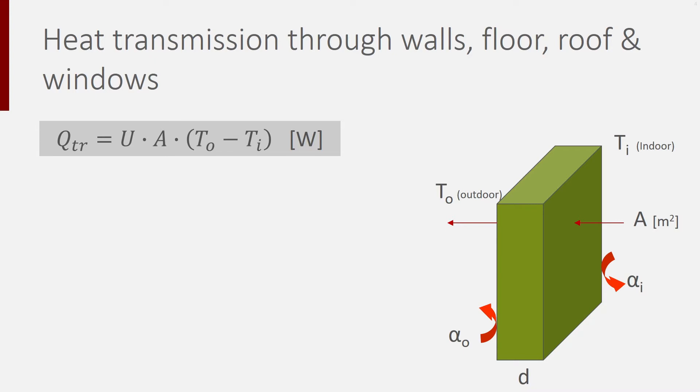Let's start with the heat transmission through the envelope. You see on the picture a wall but it could be the same for a floor, roof or a window. You need to add the heat transmission over all these surfaces. The heat transferred by transmission is calculated as the temperature difference between outdoor and indoor multiplied by the surface area A multiplied by the heat transfer coefficient U.